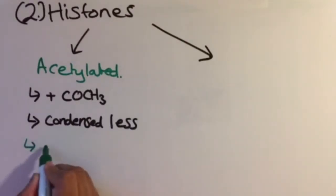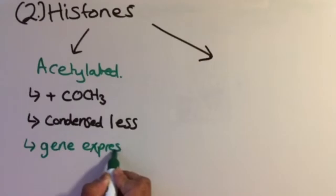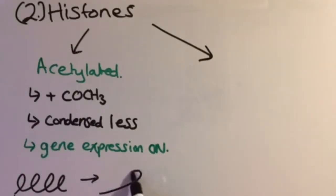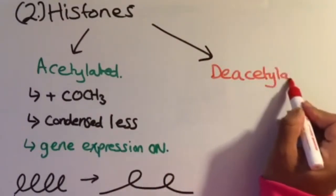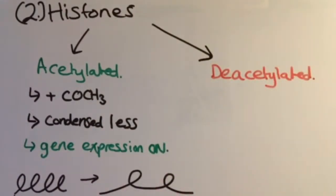This enables the DNA molecule to be condensed less, so it's more spread out, resulting in more transcription factors, such as enzymes, being able to replicate the DNA and therefore enable transcription to occur. On the other hand, we have deacetylation.